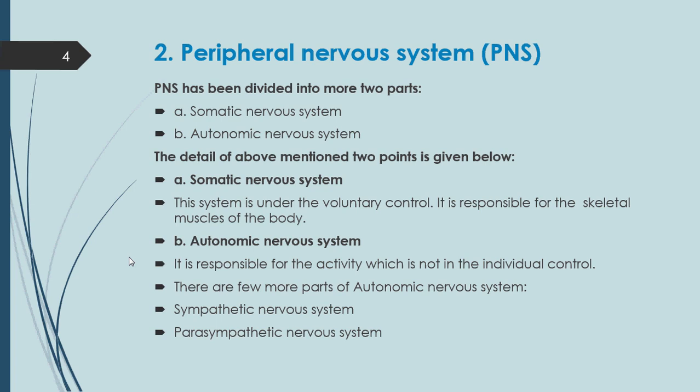The Somatic Nervous System is under voluntary control. It is responsible for the skeletal muscles of the body. So this system operates under voluntary control and its responsibility covers the skeletal muscles.